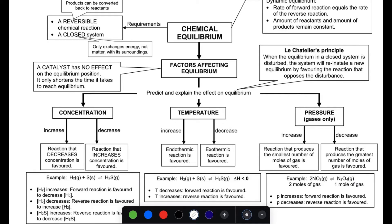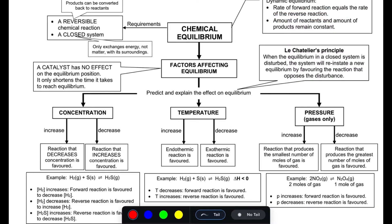Let's talk about chemical equilibrium. Chemical equilibrium is when the rate of the forward reaction equals the rate of the reverse reaction. When something is at equilibrium, the amount of reactants and products are equivalent and they do not change — all the concentrations of products and reactants are constant.